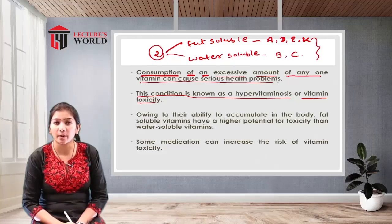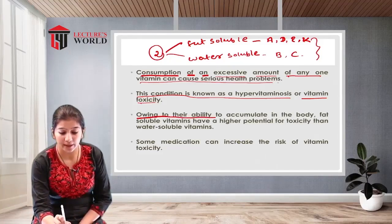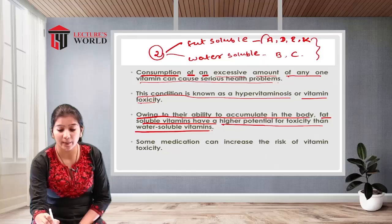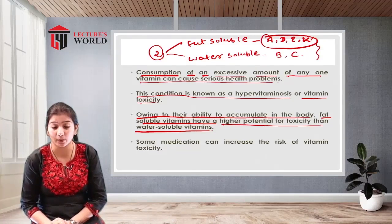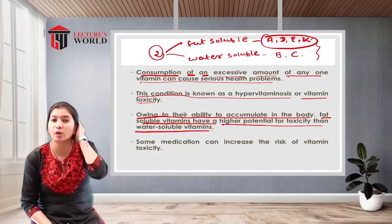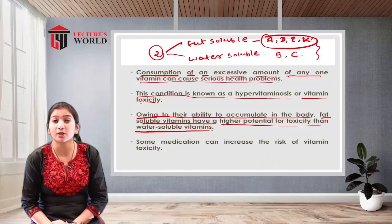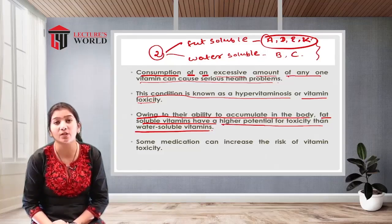Hypervitaminosis or vitamin toxicity occurs because of excessive consumption of vitamins. Owing to their ability to accumulate in the body, fat soluble vitamins have a higher potential for toxicity than water soluble vitamins. Vitamins A, D, E, and K may cause major health issues if taken in larger amounts, because water soluble vitamins can be excreted through urination and perspiration, whereas fat soluble vitamins stored in fat are not removed by the body.